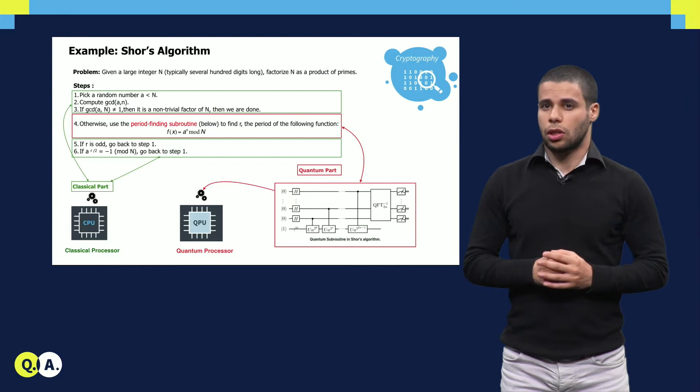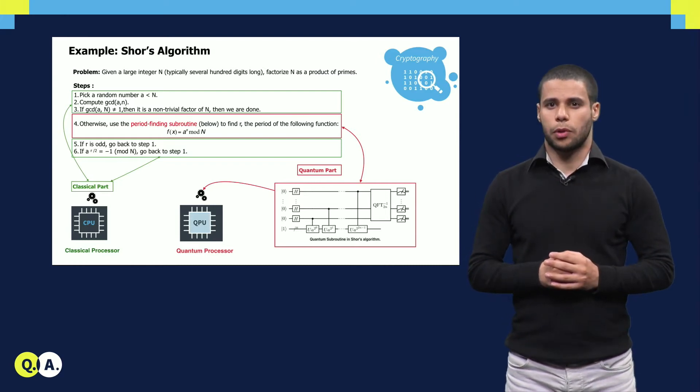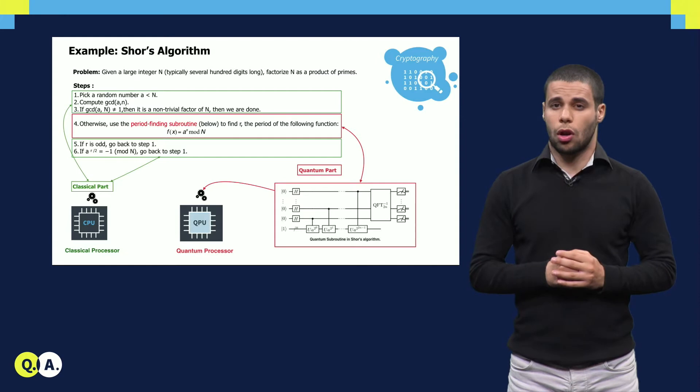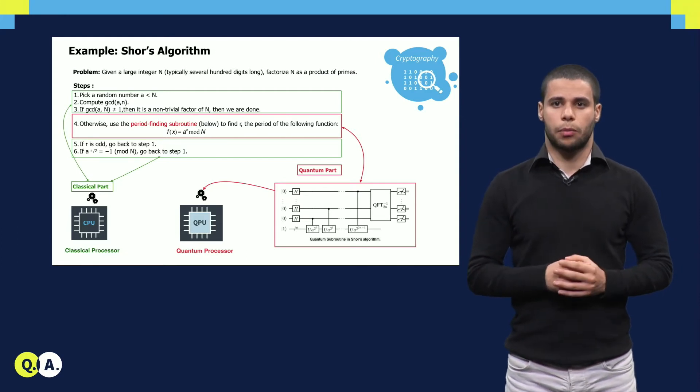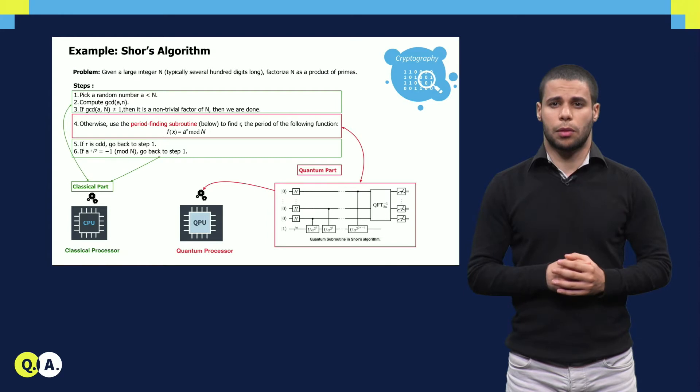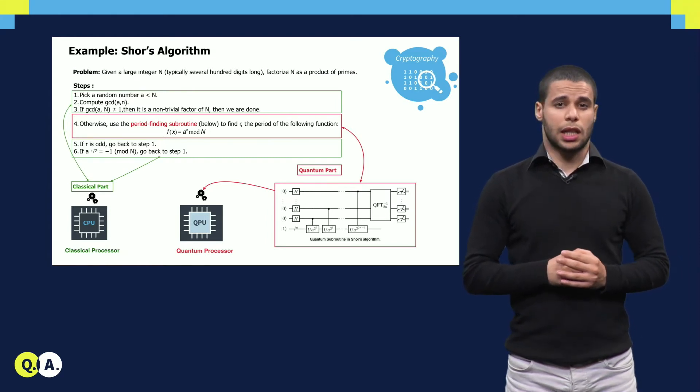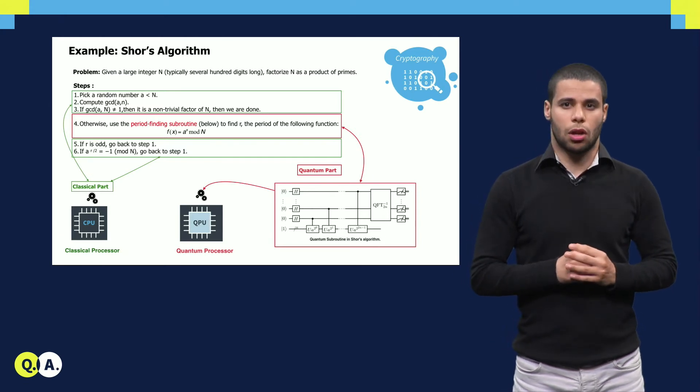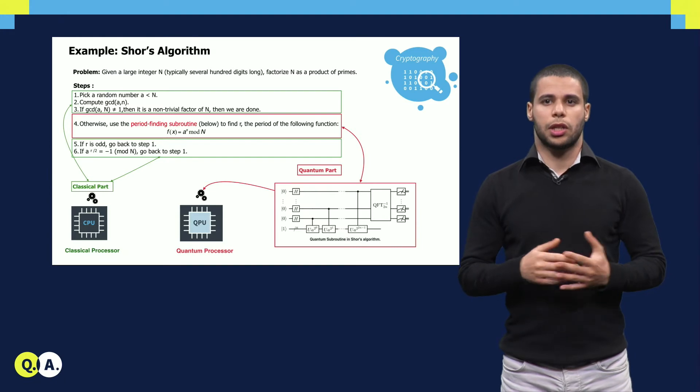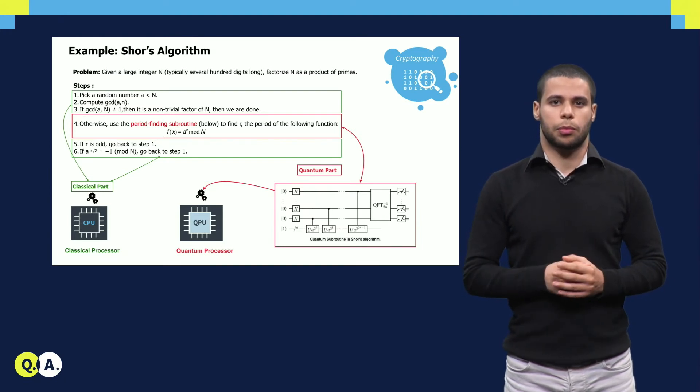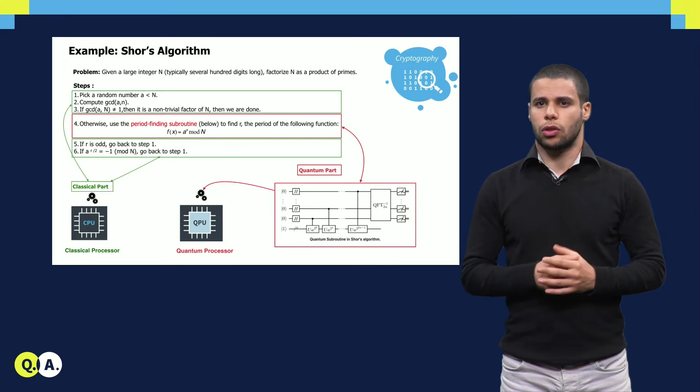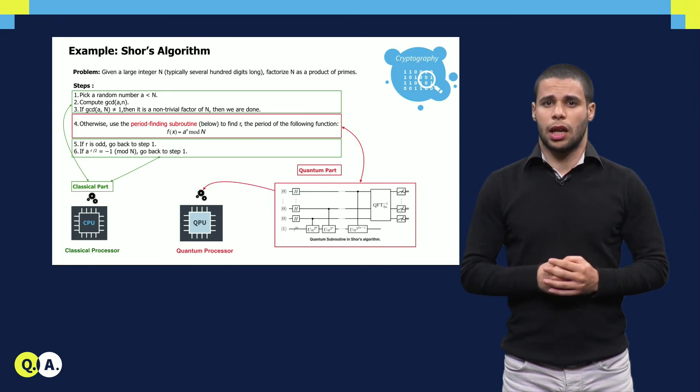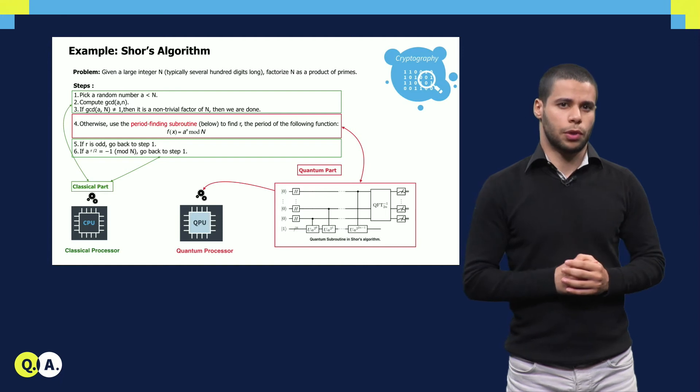Let's consider Shor's factoring algorithm, which finds prime factors of large numbers and offers significant speedup compared to classical implementations. Shor's algorithm is a mix of classical and quantum instructions. For instance, computing the greatest common divisor of two numbers can be done efficiently on a classical processor, while the quantum Fourier transform (QFT) and other quantum operations are done by the quantum processor.